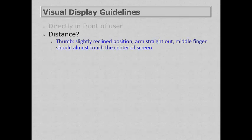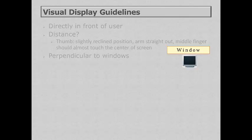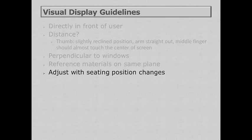For visual display placement guidelines: put the display directly in front of the user — if you hold your hand straight in front of you, your middle finger should basically touch the center of the screen. Set the monitor perpendicular to windows; if the monitor faces a window there will be a contrast difference, and if the window is behind the user there will be more glare on the screen. Reference material should be on the same plane as the monitor.